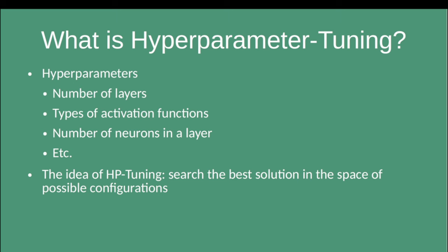The idea of tuning these parameters is to search for the best combination so that the model has the highest performance on a specific task. You can do this manually — for instance, deciding on a two-layer model, training it, looking at the performance, then increasing the number of layers and comparing. But it is much easier to find some kind of automatism where certain code and frameworks exchange the parameters for you and also do the whole testing.